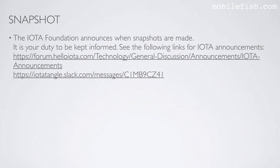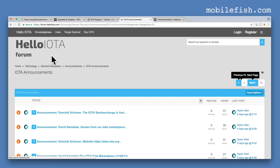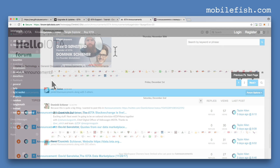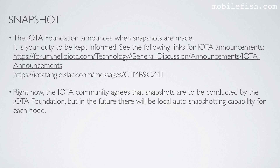The IOTA Foundation announces when snapshots are made. It is your duty to be kept informed. See the following links for IOTA announcements: on the Hello IOTA forum you can find IOTA announcements, and on the IOTA Tangle Slack page under the announcement channel you can find IOTA announcements. Right now the IOTA community agrees that snapshots are to be conducted by the IOTA Foundation, but in the future there will be local auto-snapshotting capability for each node.